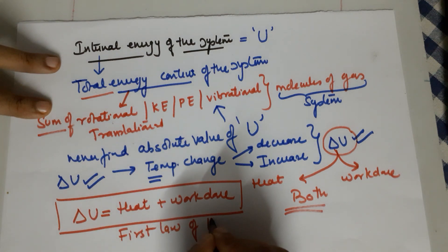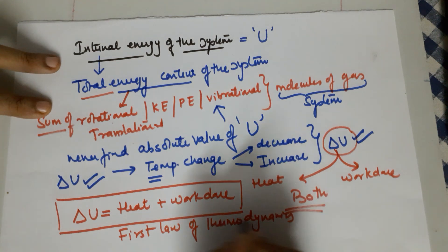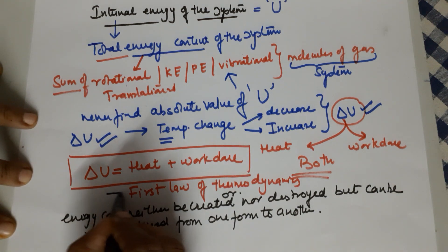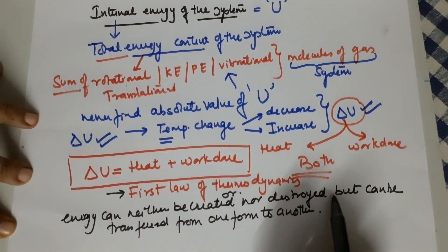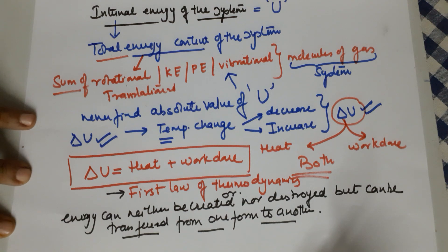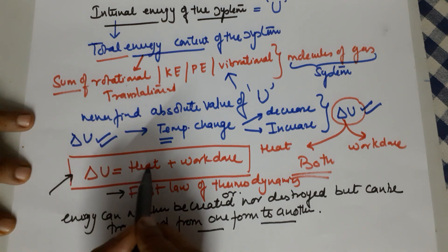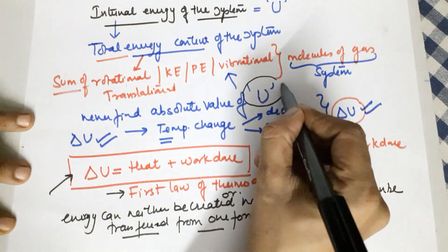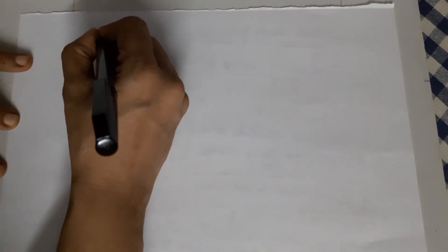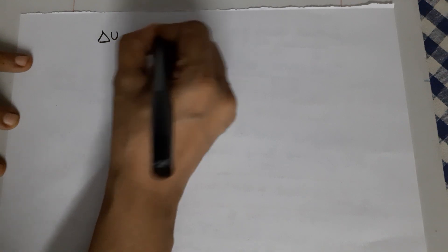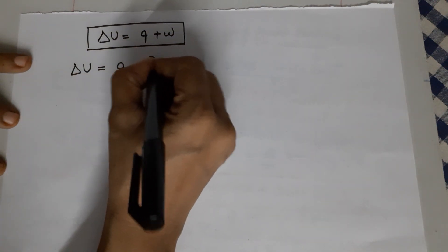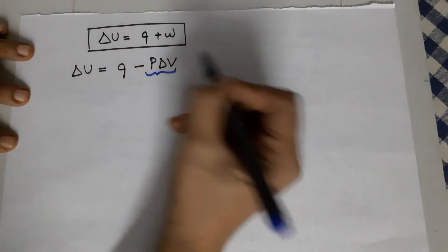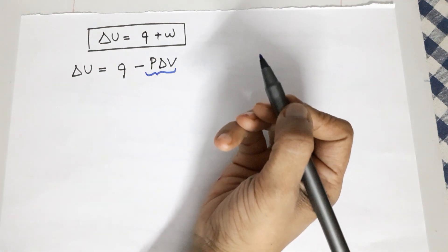This expression ΔU = q + w is also the mathematical expression for the First Law of Thermodynamics. The statement of the First Law is: energy can neither be created nor destroyed, but can be transferred from one form to another. The mathematical expression is ΔU = q + w, which can also be written as ΔU = q − pΔV, since work done in thermodynamics is the pressure-volume work.